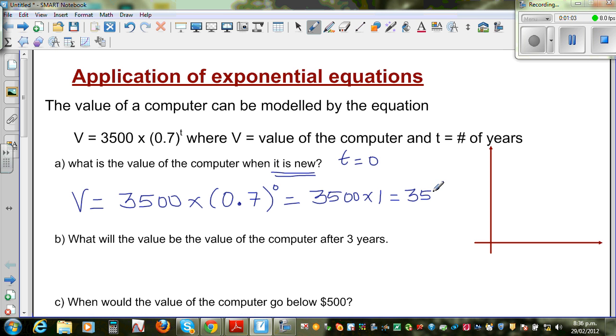So this is 3500 times 1 which is 3500. In other words, when the person bought the computer, it had the value of $3500, or a new computer was costing $3500.